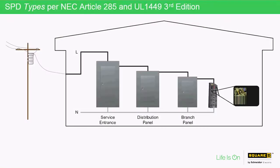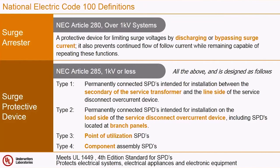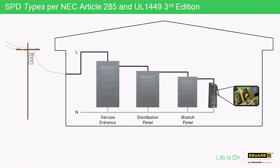Let's take a look at all of the surge protection device types per NEC Article 285 and UL 1449 third edition. This slide explains how the National Electric Code defines the different surge device types, and we're going to go into more detail on the differences between Type 1, Type 2, Type 3, and Type 4. This slide is paraphrased from UL 1449 third edition, where the type designations were introduced.